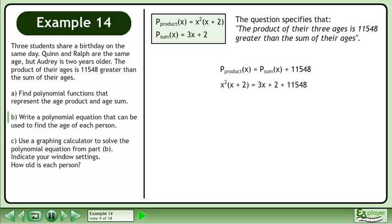The product of the ages is x²(x + 2), and the sum of the ages is 3x + 2. On the left side of the equation, multiply the factors to get x³ + 2x². Add the constants to get 11,550.